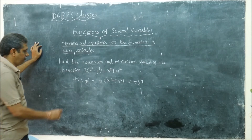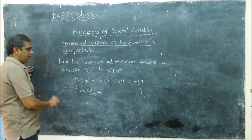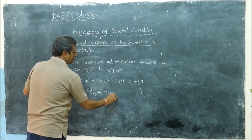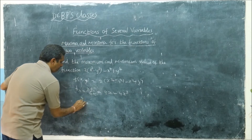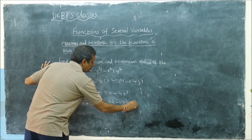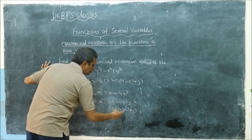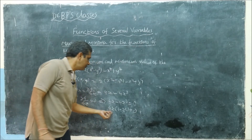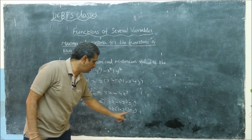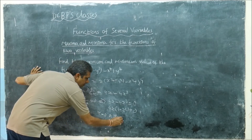Now my aim is to find fx, which is nothing but ∂f/∂x. So fx equal to 0. Differentiating with respect to x, keeping all other variables constant, we get 4x minus 4x³ equal to 0. Taking 4x common: 4x(1 minus x²) equal to 0. So x equal to 0, or 1 minus x² equal to 0, giving x equal to 0 or x equal to plus or minus 1.